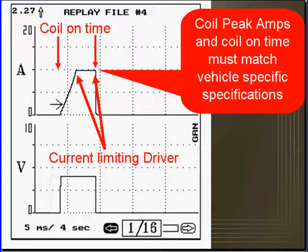Coil PCM and coil on time must match vehicle specific specifications. You can see that we are measuring coil on time and on this one at the top, it is a current limiting driver. Current builds and then it holds.